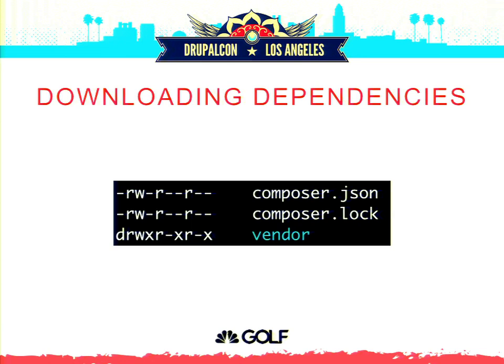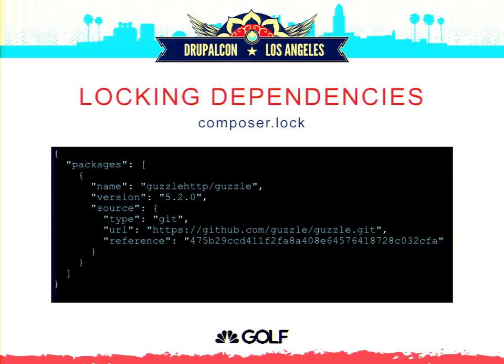After running composer install, you get a composer.lock file and a vendor directory. The lock file is a JSON file auto-generated by Composer — you don't ever need to touch it. It records specific version numbers, like 5.2.0 with a specific git commit hash. When someone downloads your repository and runs 'composer install,' Composer ignores the composer.json and only looks at the lock file, so everyone gets the exact same version of all dependencies — no mismatched dependencies.